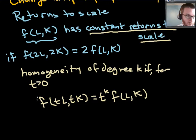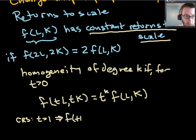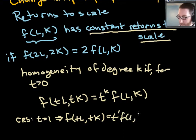So, for constant returns to scale, call it CRS. We can see that if k equals 1, then f of tL, tK equals t to the first power f of L, K.